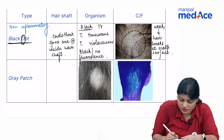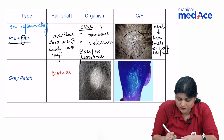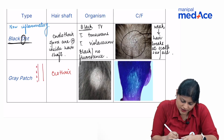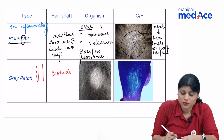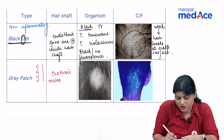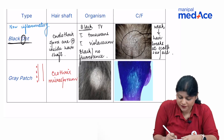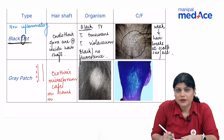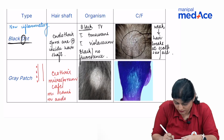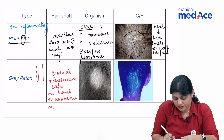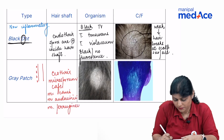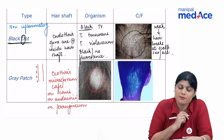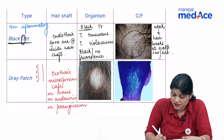Next we have grey patch, which is ectothrix — the spores are present outside the hair shaft. Grey patch is caused by Microsporum species. Remember it as cafe: Microsporum canis, Microsporum audouinii, and Microsporum ferrugineum. The patient presents as grey patch and shows green fluorescence on Wood's lamp.